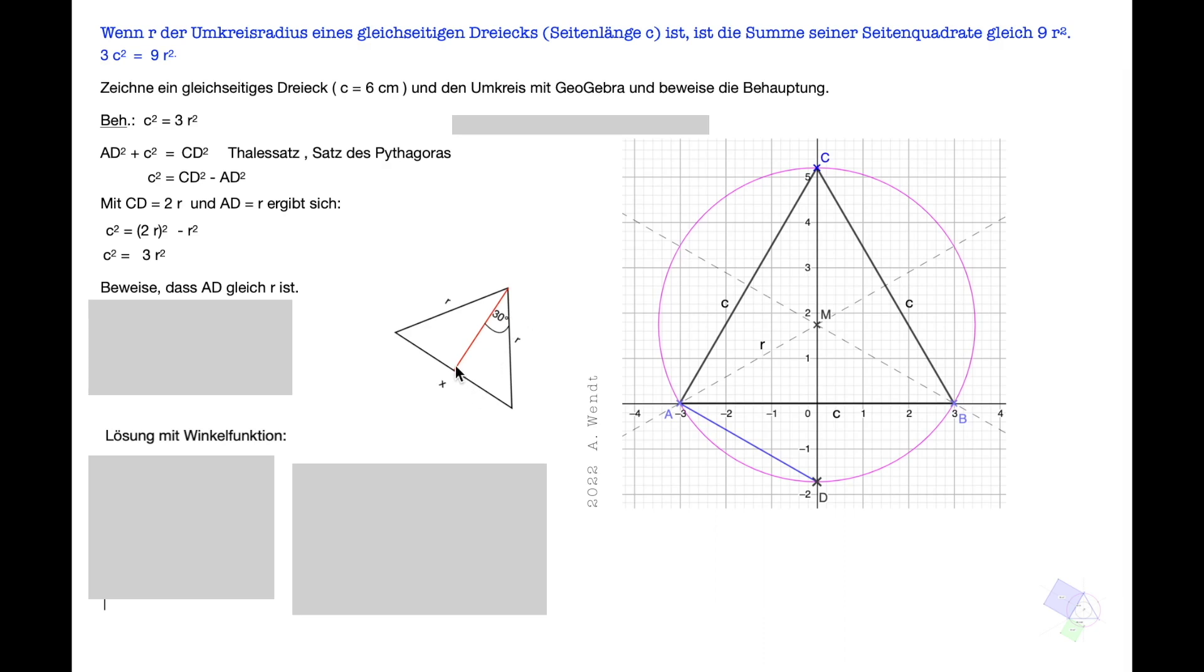Sinus 30 Grad ist Gegenkathete durch Hypotenuse. Sinus 30 Grad ist ein Halb X oder 0,5X durch R. Wir multiplizieren mit R und erhalten 0,5X gleich R mal Sinus 30 Grad. Sinus 30 Grad ist aber gerade 0,5. Dann teilen wir diese Gleichung durch 0,5 und erhalten X gleich R. Also das stimmt schon mal, dass das hier der Radius vom Umkreis ist.